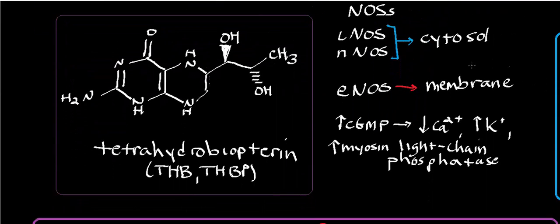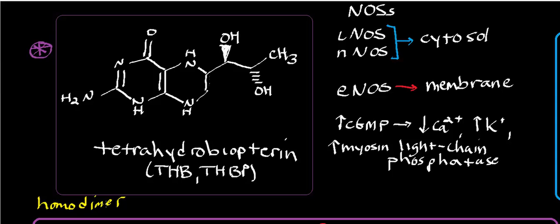There's also a molecule in the active site called tetrahydrobiopterin. Nitric oxide synthase can exist as a cytosolic enzyme or a membrane-bound enzyme, depending on which isoform you're talking about. More importantly, it is a homodimer — two identical subunits that come together to make the enzyme. Part of the function of tetrahydrobiopterin is to stabilize the enzyme in the homodimer form.